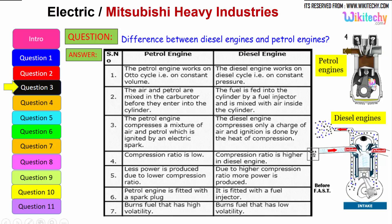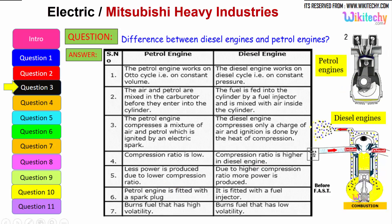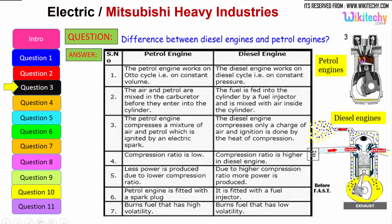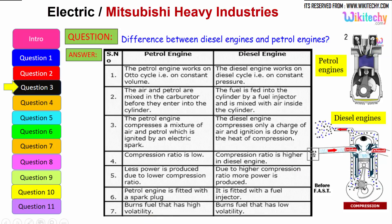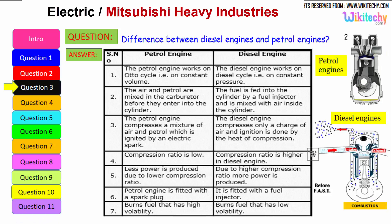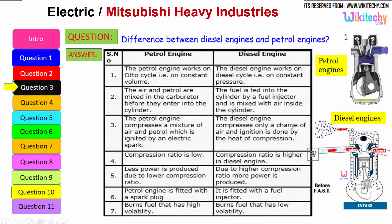The compression ratio is low in the petrol engine, whereas it is higher in the diesel engine. Less power is produced due to the lower compression ratio; with a higher compression ratio, more power is produced. The petrol engine is fitted with a spark plug, while the diesel engine is fitted with a fuel injector. The petrol engine burns fuel with high volatility — petrol is highly volatile — whereas the diesel engine burns low-volatility liquids; diesel is a low-volatile liquid. These are some of the key differences between the petrol engine and the diesel engine.